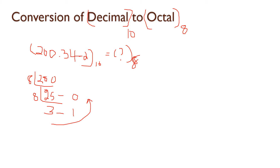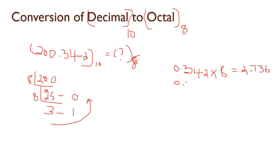Now calculate the fraction part: 0.342 multiplied by 8. The result is 2.736, so we take 2 and carry forward 0.736.